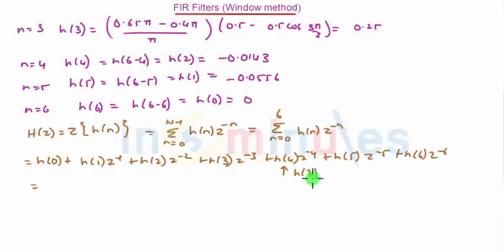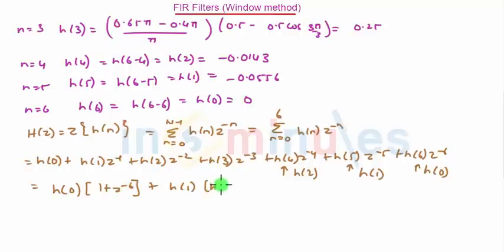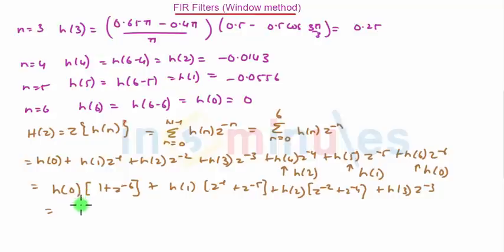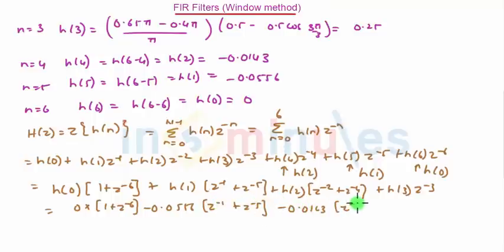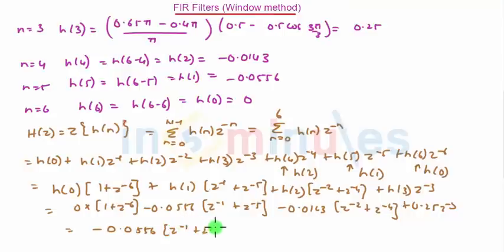Using the symmetry property, h(4)=h(2), h(5)=h(1), and h(6)=h(0). Taking the common terms, we get: h(0)·(1 + z^(−6)) + h(1)·(z^(−1) + z^(−5)) + h(2)·(z^(−2) + z^(−4)) + h(3)·z^(−3). Substituting values: 0·(1 + z^(−6)) + (−0.0556)·(z^(−1) + z^(−5)) + (−0.0143)·(z^(−2) + z^(−4)) + 0.25·z^(−3). So finally, H(z) = −0.0556·(z^(−1) + z^(−5)) − 0.0143·(z^(−2) + z^(−4)) + 0.25·z^(−3).